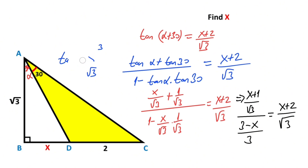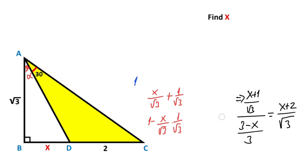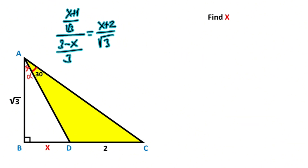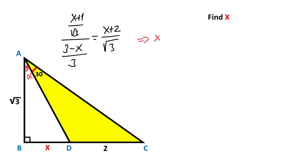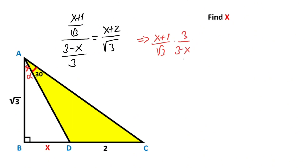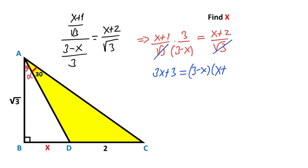Let's clear this up. We have (x + 1/root3) times (3 over (3 − x)) equals (x + 2)/root3. Multiplying through: 3x + 3 equals (3 − x)(x + 2).